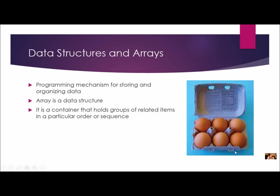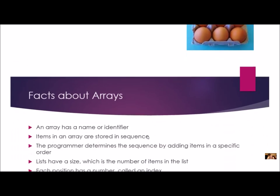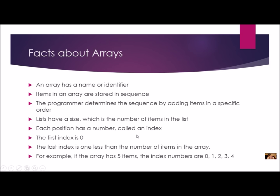Kind of like this egg carton right here — it's a container holding related items, and they're in a particular order or sequence. An array has a name or identifier, so I'm not just going to call it a container; I am going to give it a name, just like I give my objects a name. The items in the array are stored in sequence, in a particular order, and the programmer determines this order when we add the items to the array.